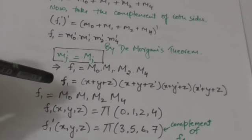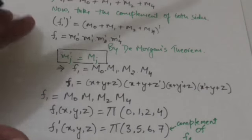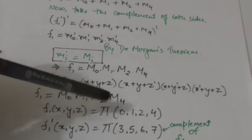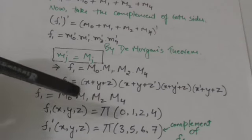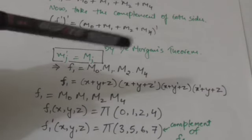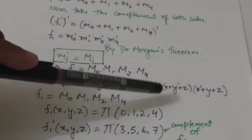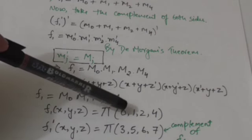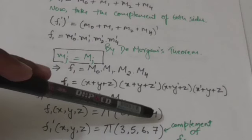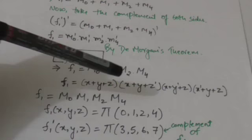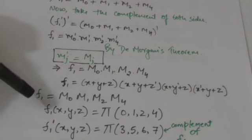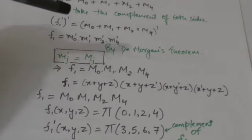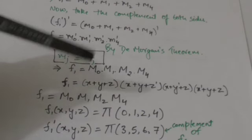This symbol pi denotes that the function is represented as a product of max terms. These numbers represent the subscripts of the max terms whose product forms the function F1. x, y and z represent the order of binary variables in the max terms.